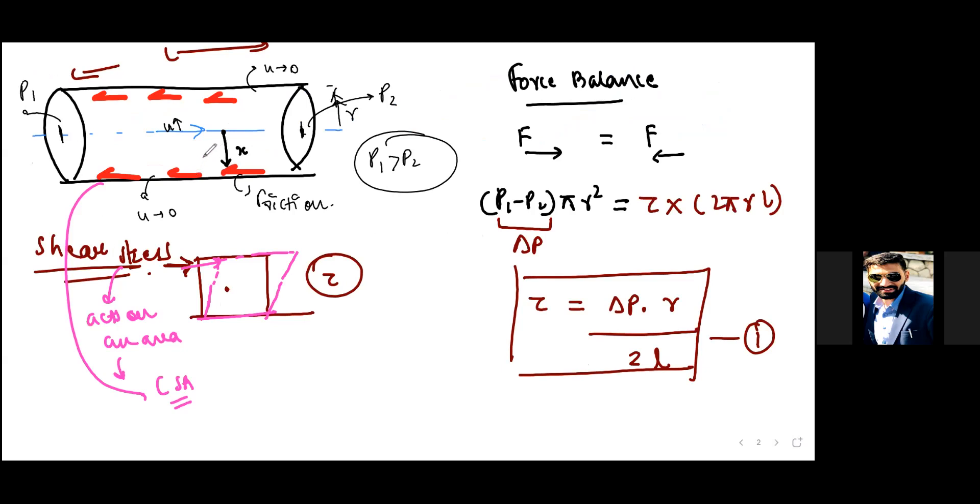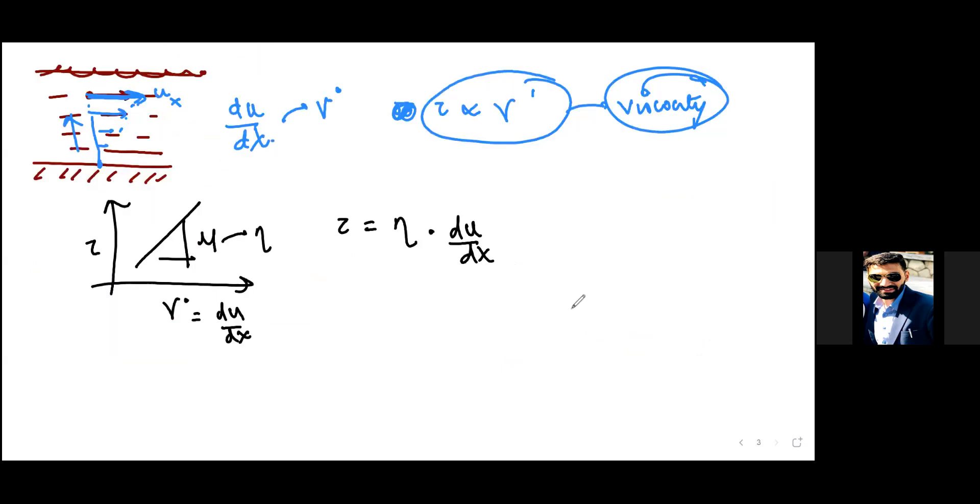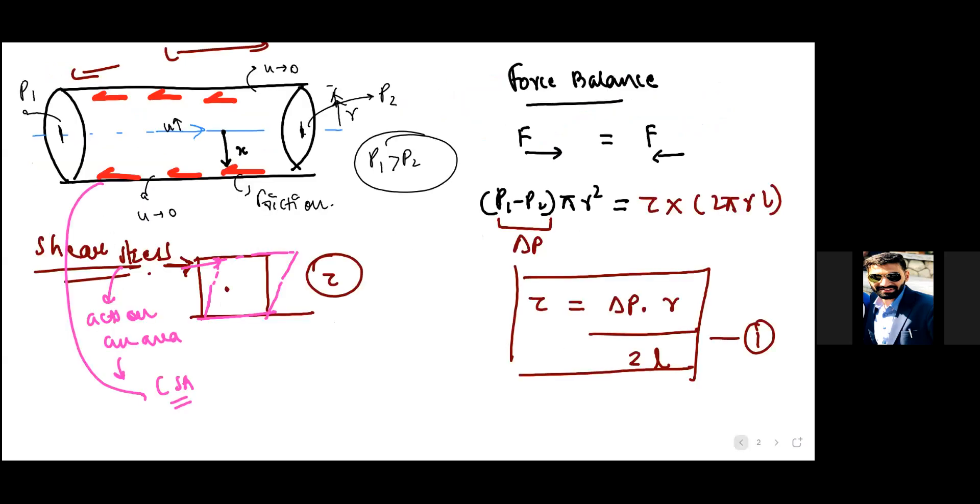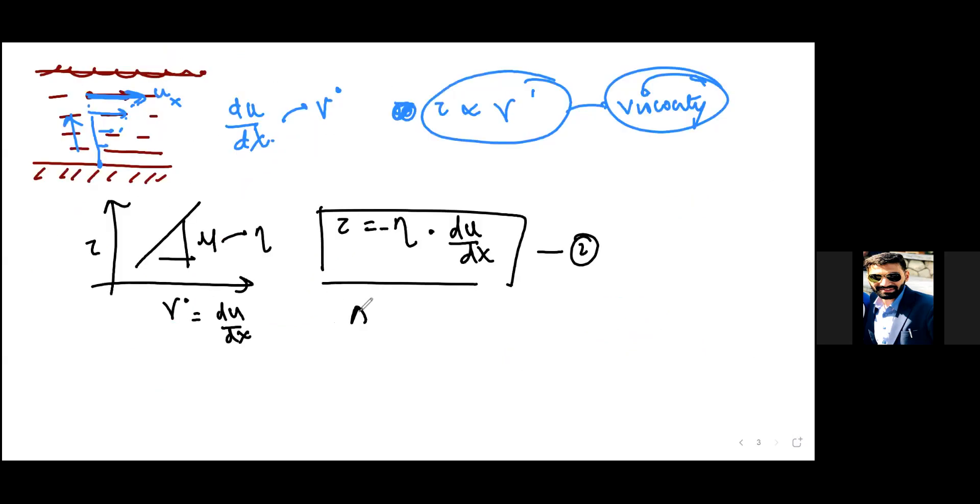If you go back to the previous slide you see this diagram. Let's give that nomenclature. x is increasing as we go away from the center so if x is increasing our velocity is decreasing therefore du by dx is negative. Shear stress or any of these terms cannot be ultimately negative so we need to put a negative sign there.